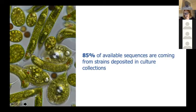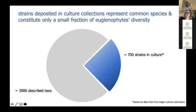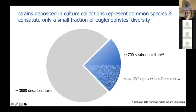One last challenge in taxonomy and phylogeny is that 85% of sequences currently available come from strains deposited in culture collections. A quick analysis of strains in the largest culture collections shows they represent only the most common species — a small fraction of described diversity. If we assume there are 3,000 described taxa, there are only around 700 strains in culture collections, and maybe around half actually represent different taxa due to duplicates. So in fact we have access in culture to only around 10% of described diversity.